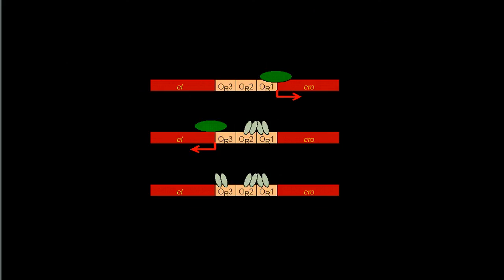The transcription of the two proteins is regulated by the CI protein itself, which is the repressor protein. You can see here, this is a lambda genome.